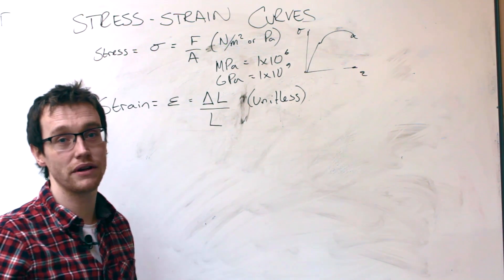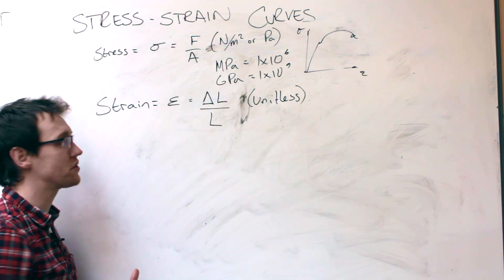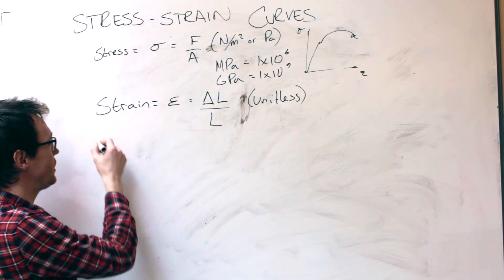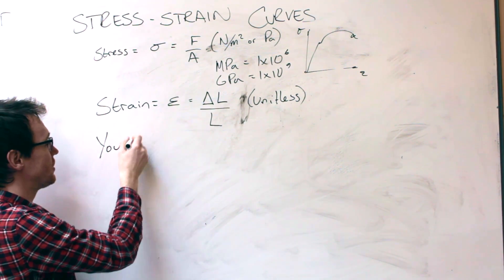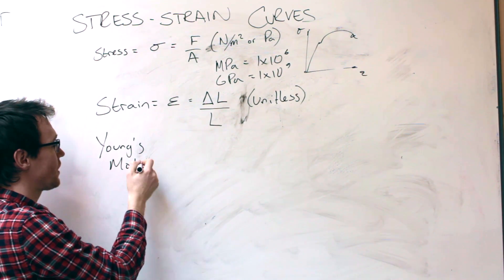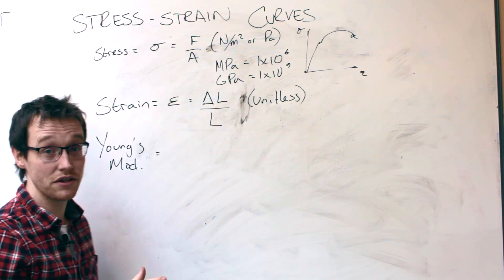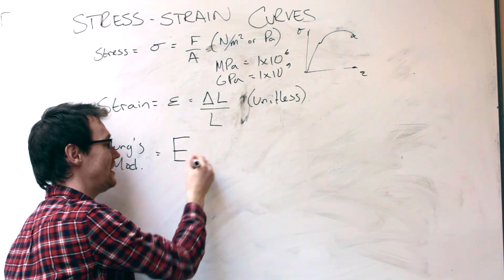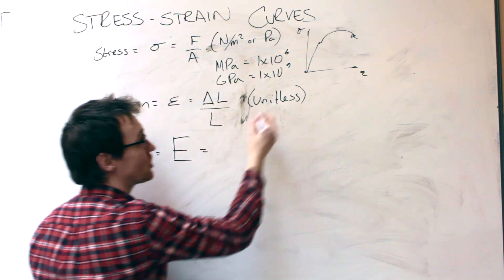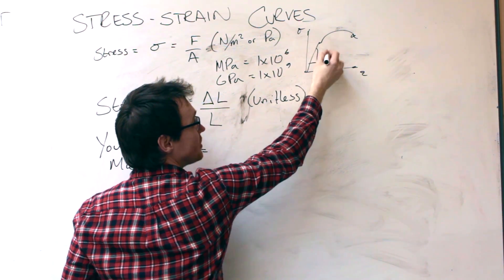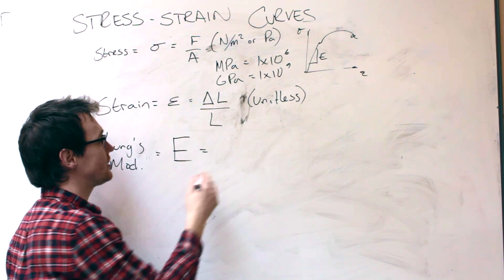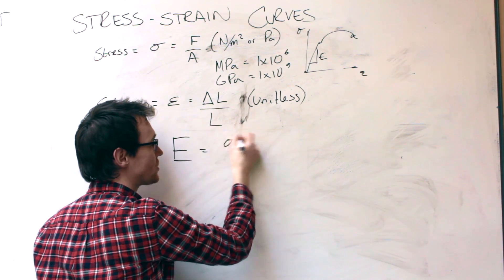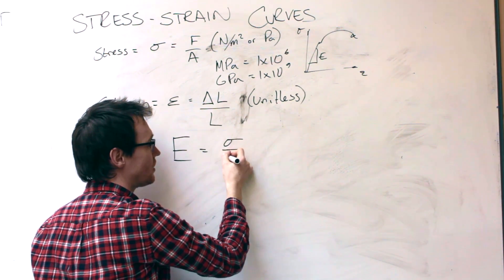Finally, we're going to come on to the Young's modulus, which is a measure of stiffness of the material. So that is given by Young's mod. Stiffness is given by E, which is the gradient of this section, remember. And E is given by stress over strain.